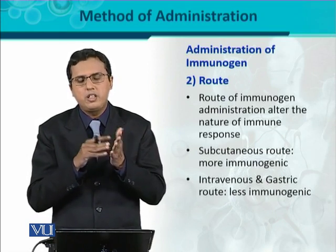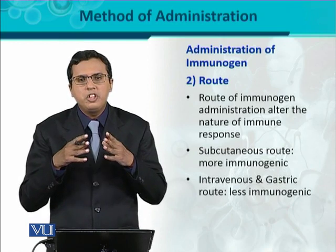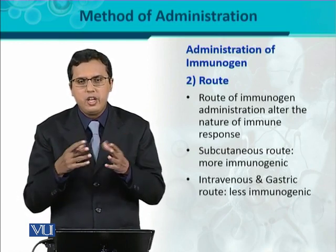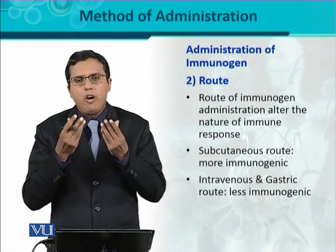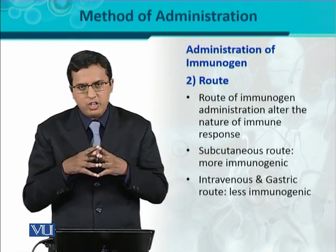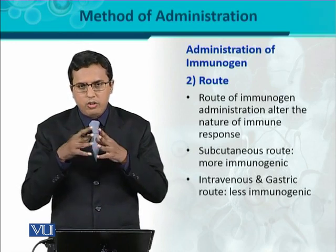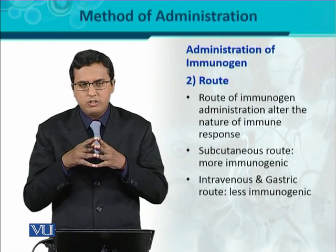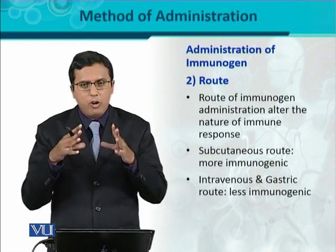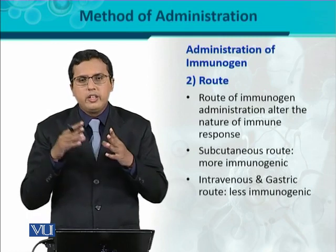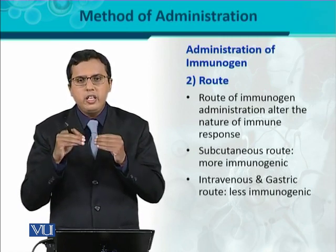The second important route is intravenous or gastric. Intravenous means directly into the blood vessels present in the body beneath the skin and in different organs. If the immunogen is introduced directly into a blood vessel, that route is called intravenous. Gastric means through the oral cavity. If the immunogen enters through the oral or intravenous route, it would be less immunogenic, because there is a possibility the immunogen could denature and change its nature, preventing an effective immune response. That is why the subcutaneous route is considered the best route for producing greater immunogenicity.